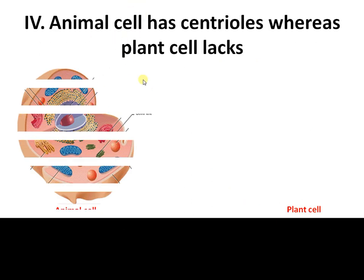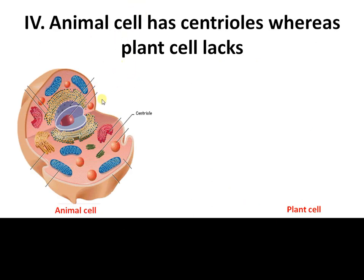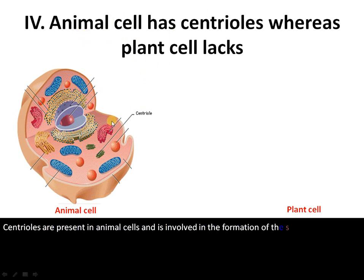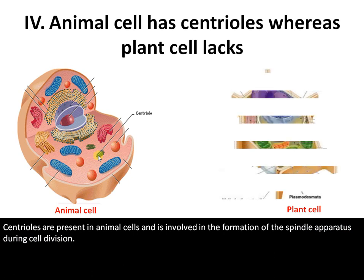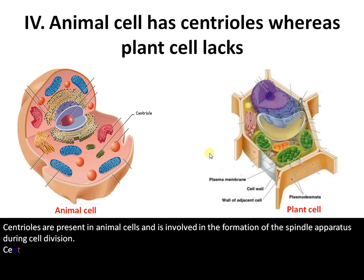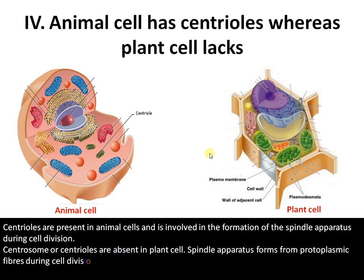The fourth difference is that in animal cells there is a structure called a centriole, responsible for the formation of spindle fibers during mitosis and meiosis. In plant cells, centrioles are absent. These spindle fibers are formed from the protoplasmic region, and not much is known about how this occurs.